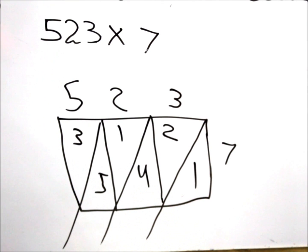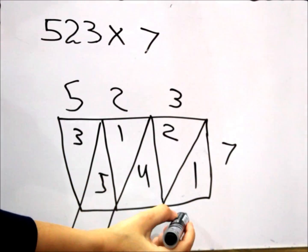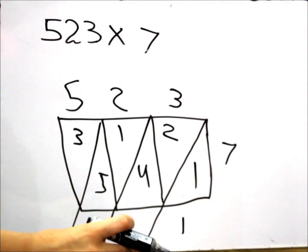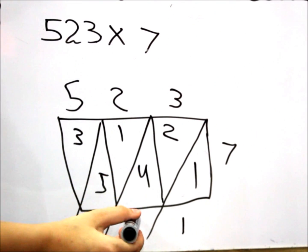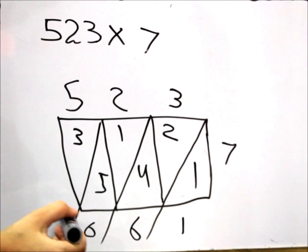And now what we have to do is add up the diagonal columns. The first column, we only have a 1, so it's just 1. The second diagonal column, it'll be 6 because that's a 2 and 4. Another 6 and a 3. And this is the answer. It would be 3661. And this is called the Glossier method.